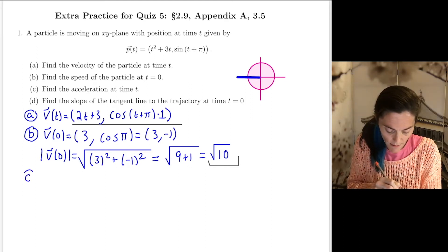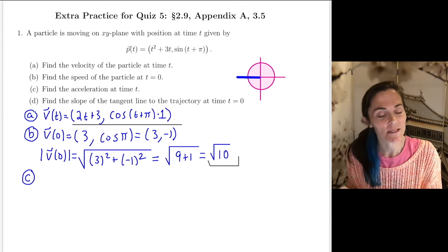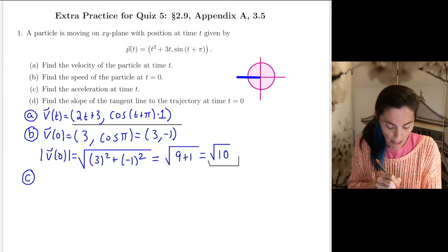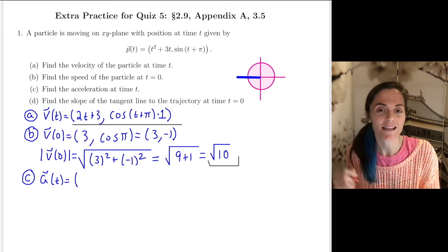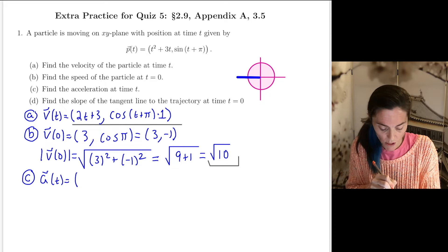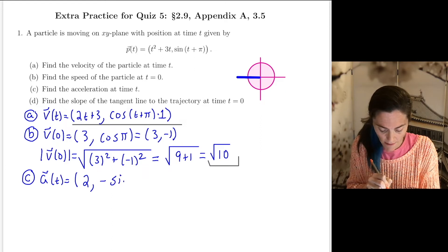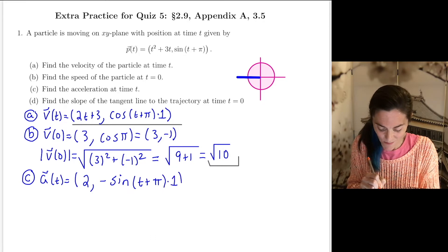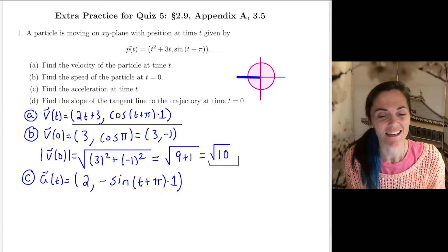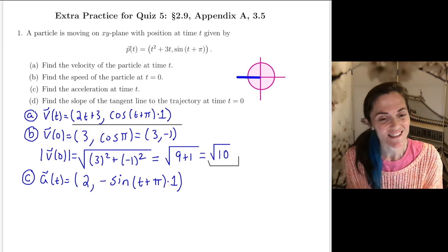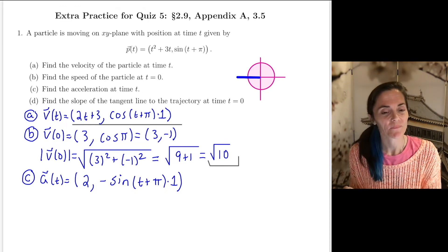But we're not finished with b. So far we found the velocity vector, and now we take its length. This is square root of 3 squared plus minus 1 squared. This is square root of 9 plus 1. My speed is the square root of 10. We want to leave numbers like this. Don't put it in your calculator. Now we move on to letter C. We want the acceleration at time t.